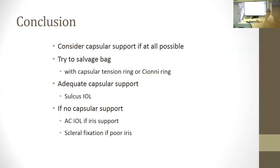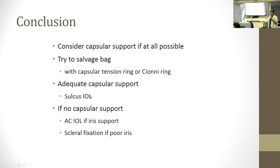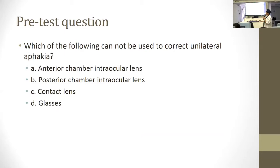To conclude this first talk: you always want to try and use the capsule to support the lens if possible — get the lens in the bag or salvage the capsular bag. Salvage the bag with a capsular tension ring if you can; if you have to attach the bag to the sclera, use a Sione ring. If there's adequate capsular support, place a lens in the sulcus. If there's no capsular support, use an anterior chamber lens implant if there's good iris support, or scleral fixation if there's poor iris support.